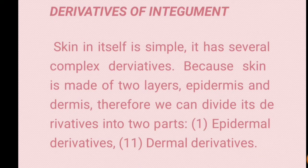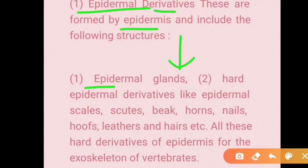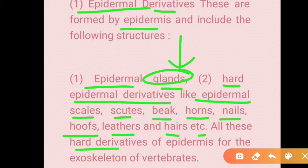Now we'll go into details. Epidermal derivatives are structures formed from the epidermis. First are epidermal glands, and the other are hard epidermal derivatives — especially epidermal scales, scutes, beak, horns, nails, hooves, feathers, and hair. All these are hard derivatives of the epidermis and are also called the exoskeleton of vertebrates.